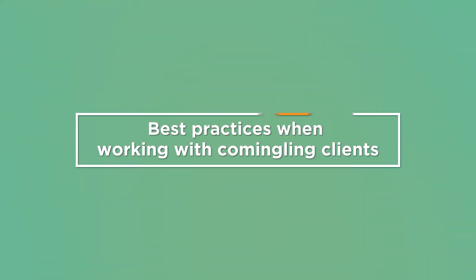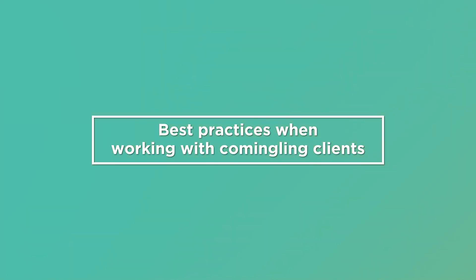Now let's go over some best practices when working with commingling clients. There should be no personal expenses included in the business books. Personal accounts should not be connected to the QBO bank feeds. For sole proprietors in the U.S., record any personal expenses to owner's draw or an equivalent account. For S-Corp and partnership businesses in the U.S., business owners may be reimbursed for business expenses that were paid for with personal funds. Make sure to implement processes and accountability with your client to track cash expenditures.